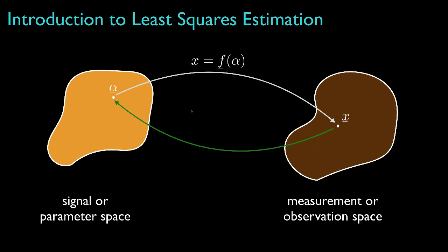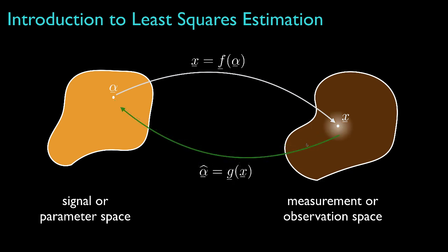Our estimation task then is to process the observation x in a way that recovers the unknown parameter alpha as best as we can. In general, we'll think of this as specifying a function g that maps the observation in the measurement space back to the parameter space. We'll call this function g our estimator, and we'll call the value alpha hat that it produces for a particular observation the estimate. Now we might be inclined to think of g as the inverse of f, but it's possible that f will not have an inverse, and in most practical situations there will be measurement or observation noise that will cause the observation to deviate from the value that is predicted by the observation function f. So estimation theory in general is concerned with ways in which we derive and implement the estimator g.